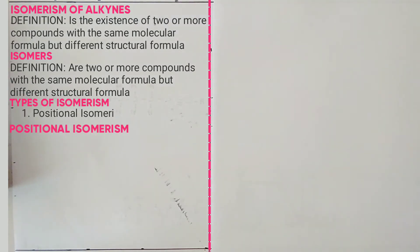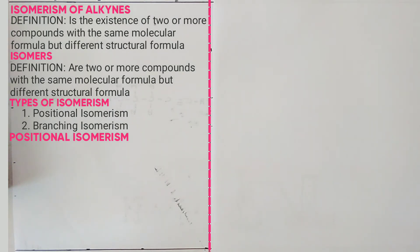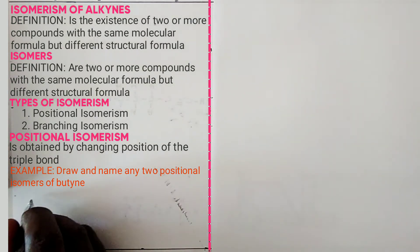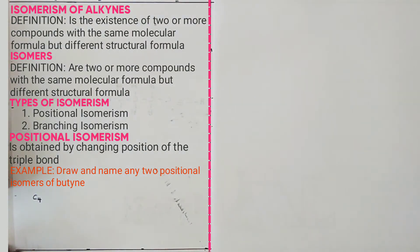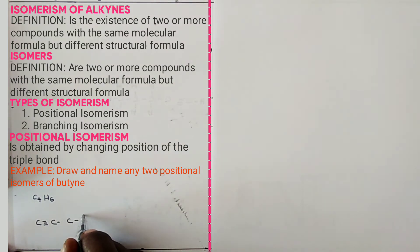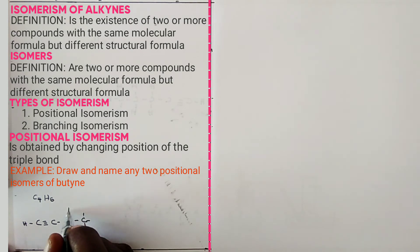Position isomerism is obtained by changing the position of the triple bond. For example, draw and name any 2 position isomers of butyne. Butyne has the molecular formula C4H6, since 2×4−2 = 6. To draw the first position isomer, draw 4 carbon atoms and place the triple bond between carbons 1 and 2. The rest become single bonds; add hydrogen atoms to give each carbon 4 bonds.